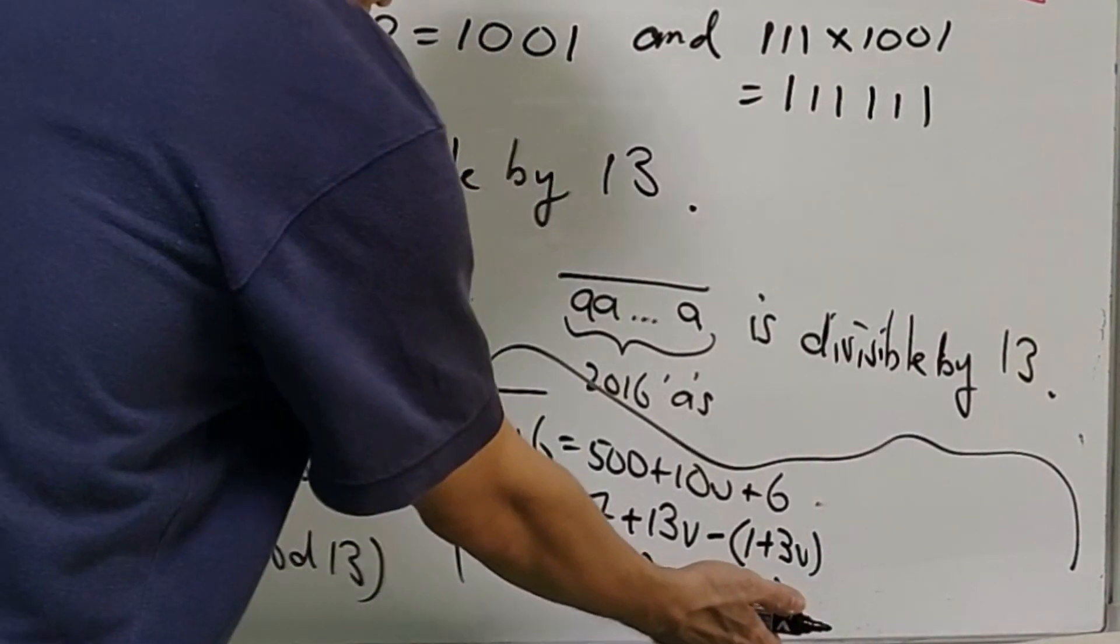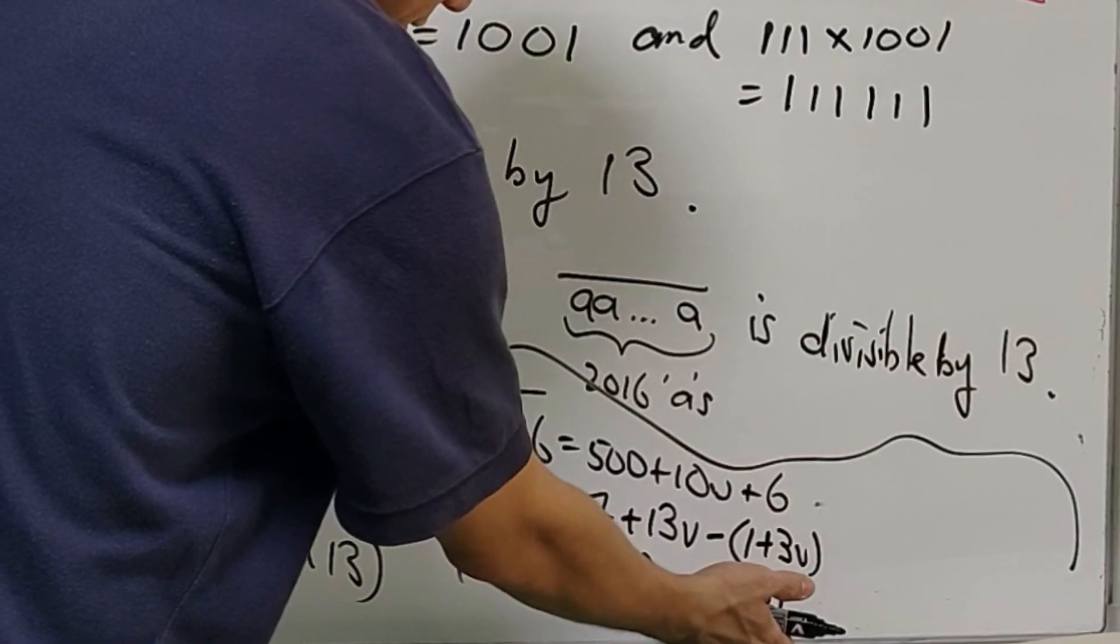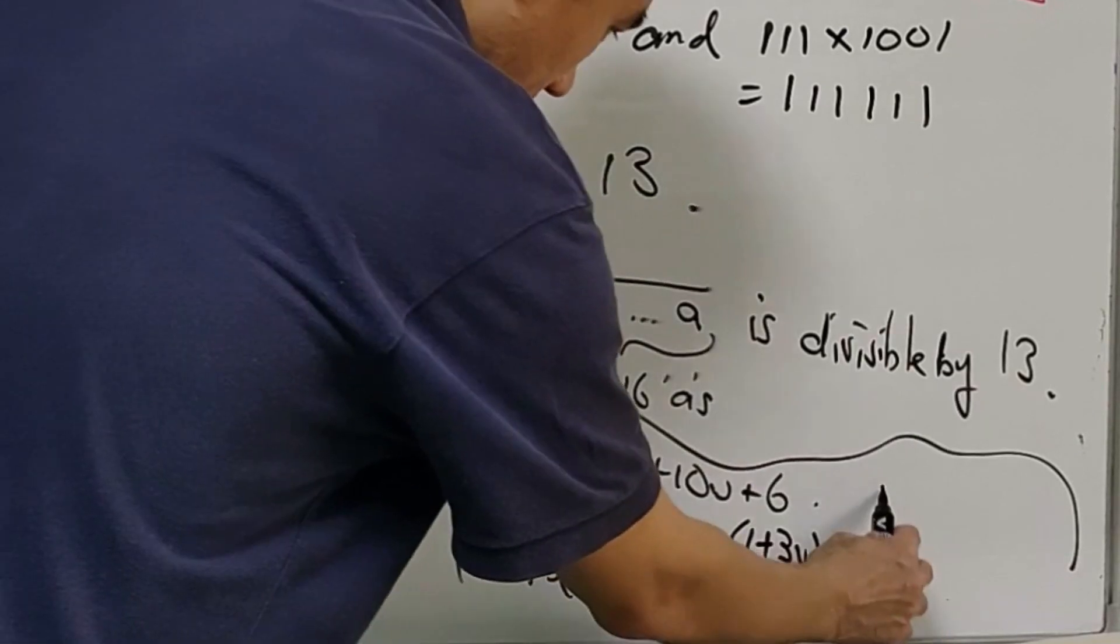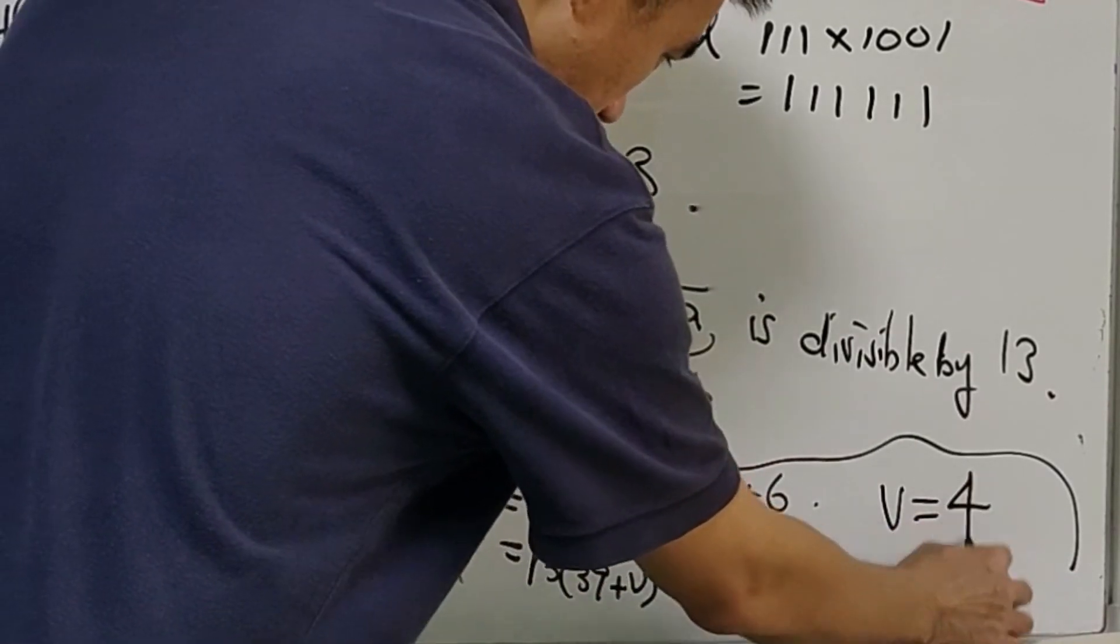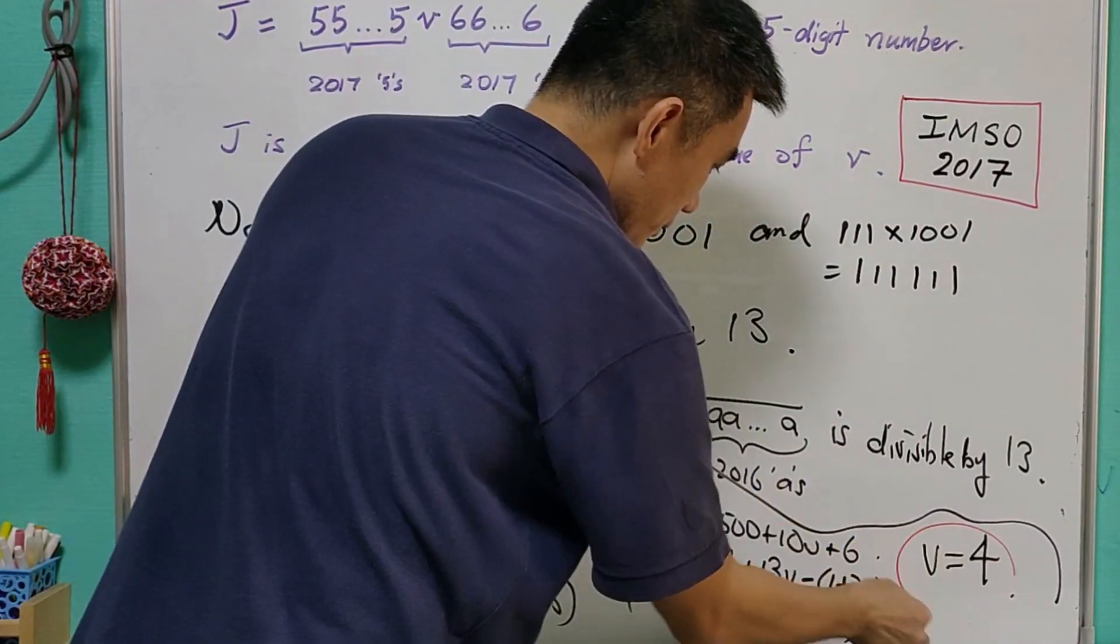Now we can easily check that the only value of V such that 1 plus 3V is divisible by 13 is 4, and therefore the value of V is equal to 4.